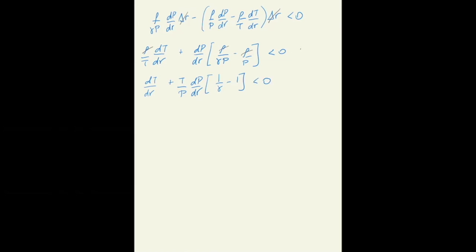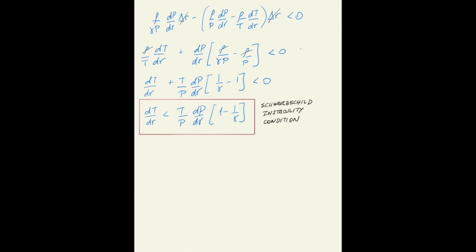Subtract the second term from both sides and you have the condition for convection in terms of the temperature gradient: the temperature gradient must be less than T over P times dP/dr times one minus one over gamma. This is known as the Schwarzschild instability condition. I said that the temperature gradient must be bigger than the radiative gradient for convection to kick in, and yet we find the Schwarzschild condition says it must be smaller than something — that seems strange at first.